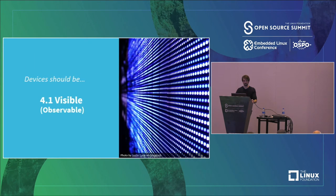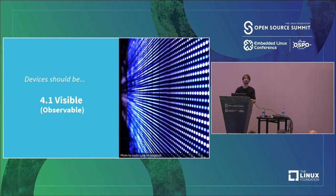Moving to visible and observable. This is more specifically for IoT or connected devices. When you have a fleet of connected devices, you always want to know what's happening — you can't have a thousand devices in the field and not know if they're connected or if anything goes wrong. The goal is to provide recommendations and steps to make that easy to observe.